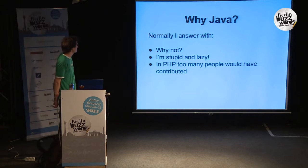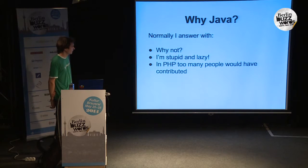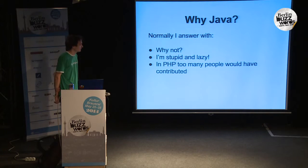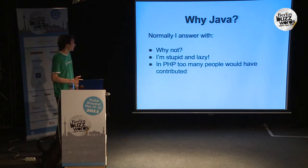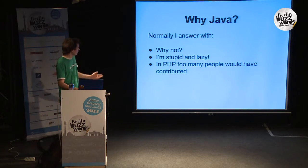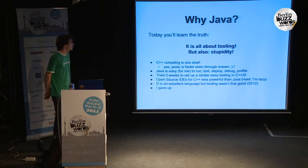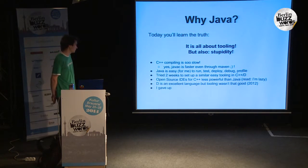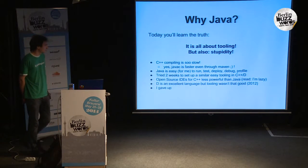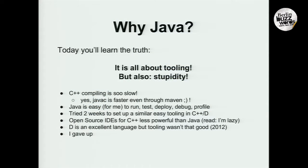Another question is why we're doing this in Java. I was asked this a lot. I answered 'why not?' or even 'I'm stupid and lazy,' or 'in PHP too many people would have contributed.' Today you will learn the truth — it's all about tooling. C++ compiling is really, really slow. Even if you execute the Java compiler through Maven, you're faster. Java is a lot easier for me to run, test, deploy, debug, and profile in combination.